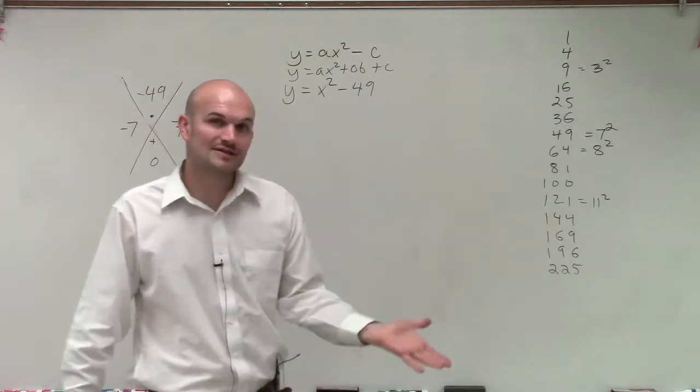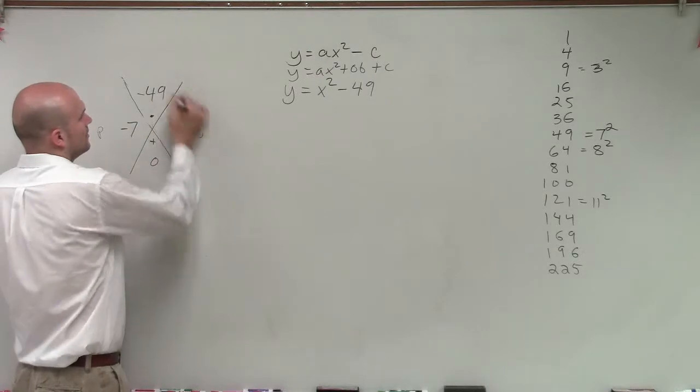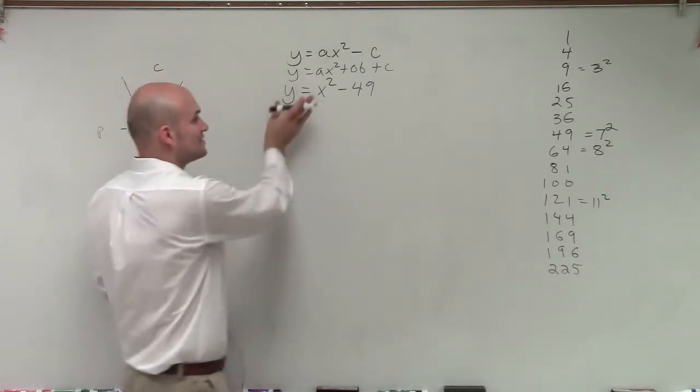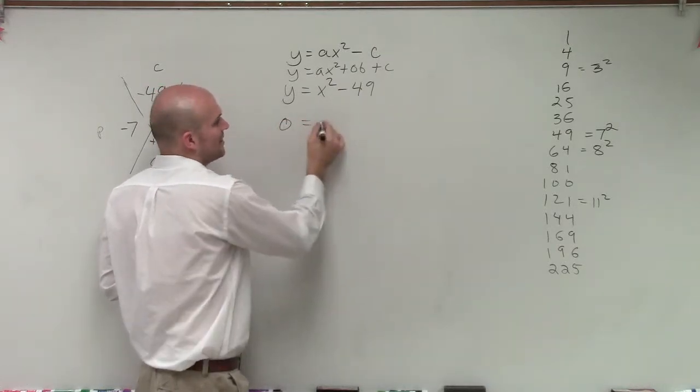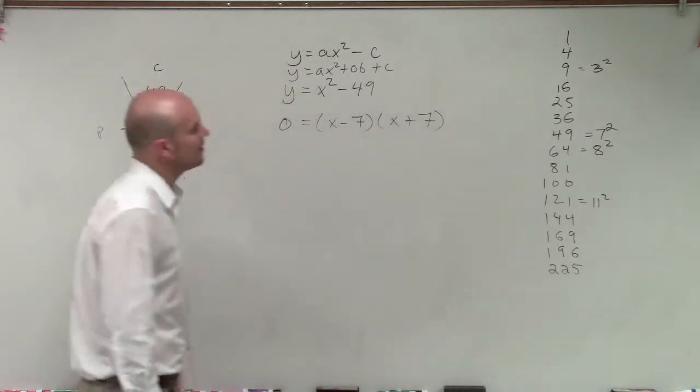So a quick little factoring technique is now you know my p and my q, as this is my c and my b, my p and q are negative 7 and positive 7. So if I was going to solve this, I would set my output value equal to 0, and I'd say x minus 7 times x plus 7.